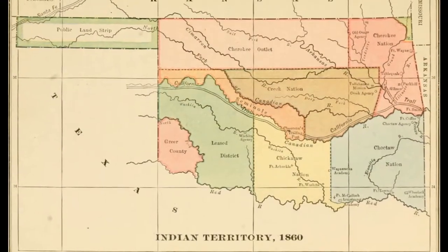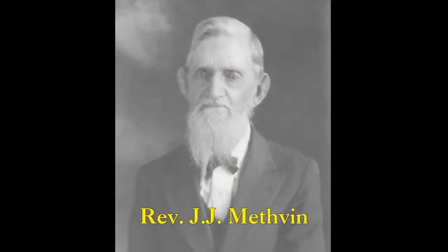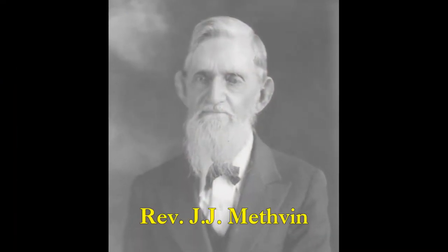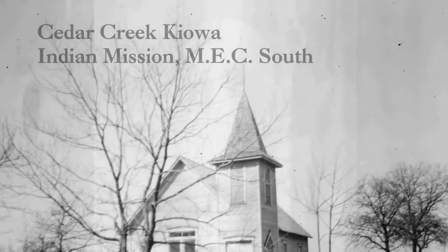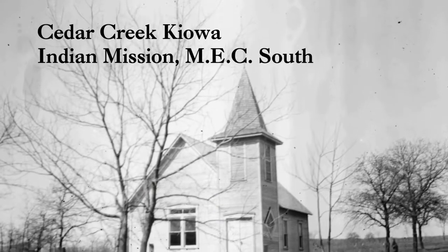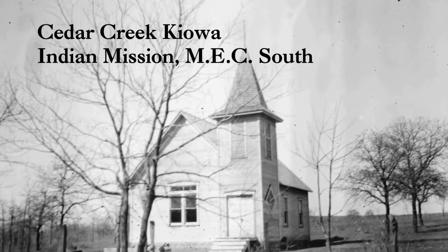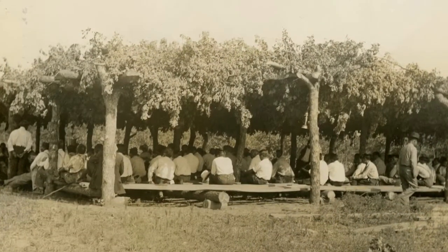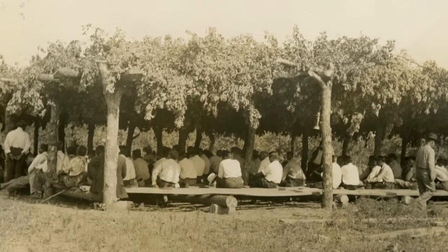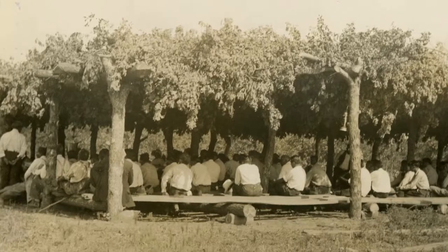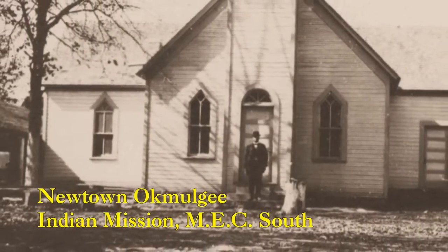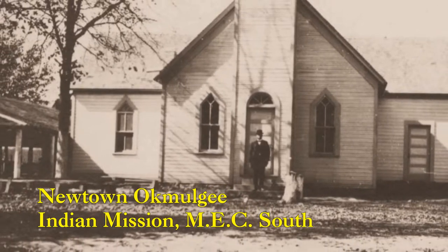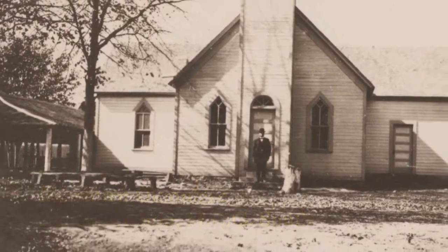Oklahoma was still Indian Territory then, and Methodist missionary efforts among the tribes were largely sponsored by the Tennessee, Mississippi, and Arkansas conferences, all of which separated to form the Methodist Episcopal Church South. The Conference of Methodist Churches in Oklahoma, known as the Indian Mission Conference, naturally followed. Thus, for several decades, the Methodist influence in Indian Territory was largely southern Methodist.